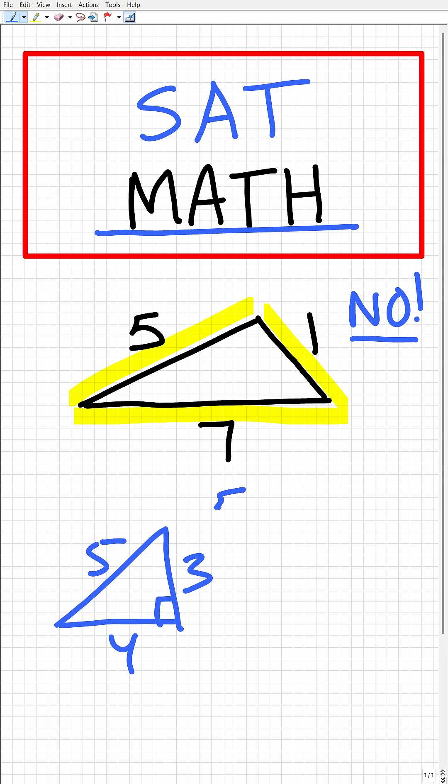So let me show you how this works. So 5 plus 3 right here will be greater than this other side, 4. So all these combinations need to hold true in a real triangle. So for example, 3 plus 4 is greater than 5. And then lastly, 5 plus 4 is greater than 3.